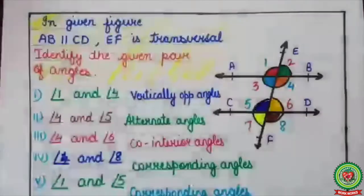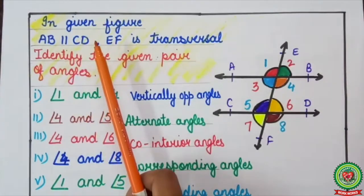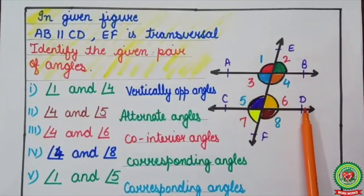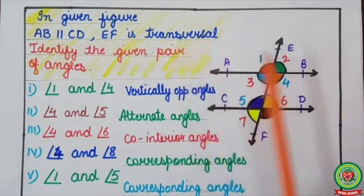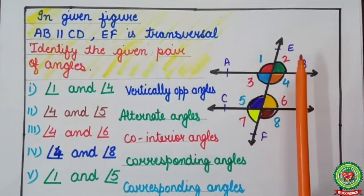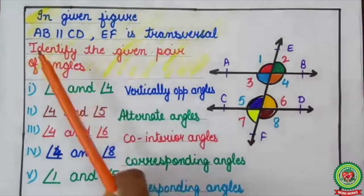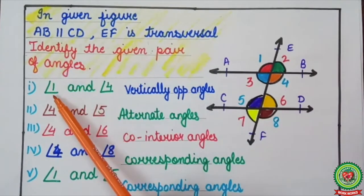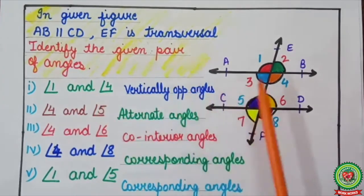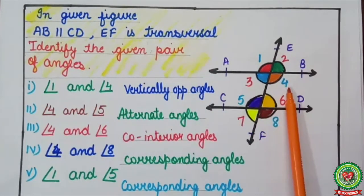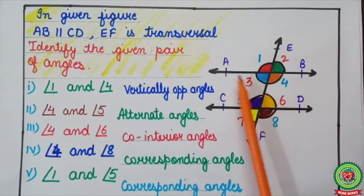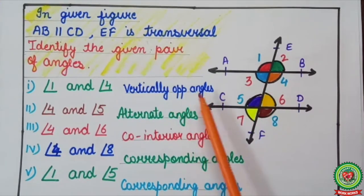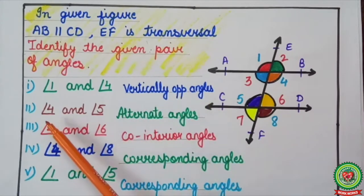Now let's see what you have understood. In the given figure, AB is parallel to CD, and EF is the transversal. Identify the given pairs of angles. First: angle one and angle four. They are forming a cross shape, so these two angles are vertically opposite angles.